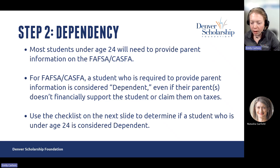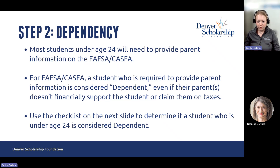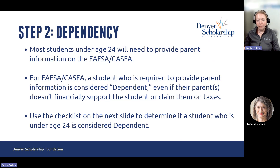From there, you can start to look at dependency. Dependency is essentially whether the student needs to include parent information on the application. Most students under the age of 24 will need to provide parent information on the FAFSA or CASFA. A student is required to provide their parent information if they're considered dependent, even if their parents don't financially support the student or claim them on their taxes. That's a pretty big myth — people think that if the student isn't claimed by their parents on taxes, they'll be independent, but that's not the case.